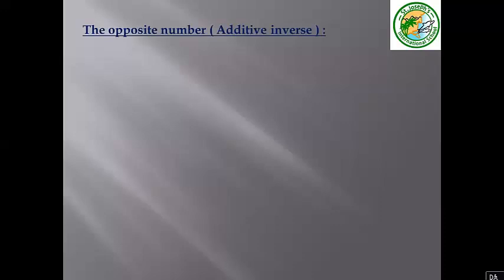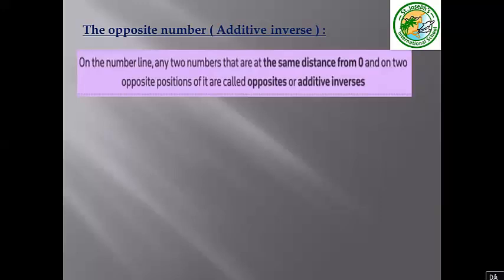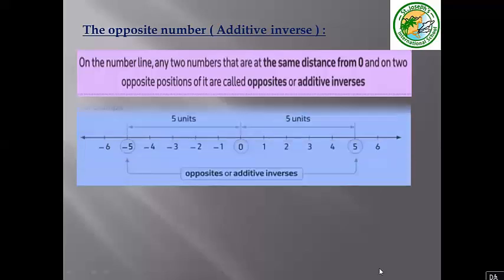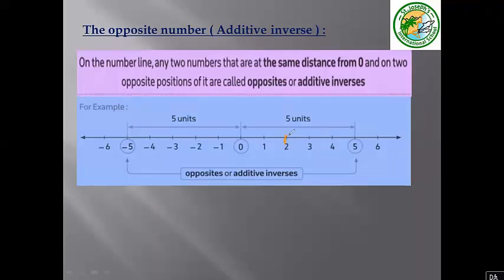The opposite number or additive inverse. On the number line, any two numbers that are the same distance from zero and on two opposite positions are called opposites or additive inverses. For example, the distance from zero to 5 is five units, and the distance from zero to negative 5 is also five units. Similarly, the distance from zero to 2 is two units, and the distance from zero to negative 2 is also two units.